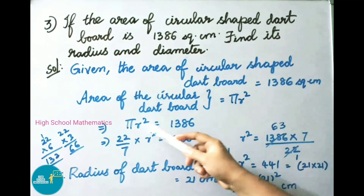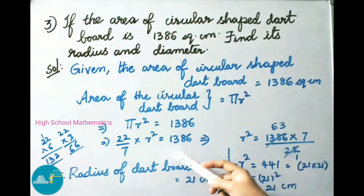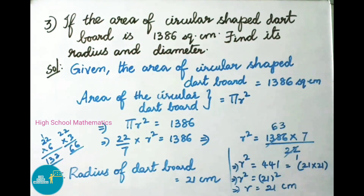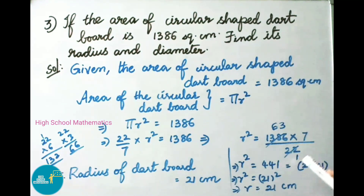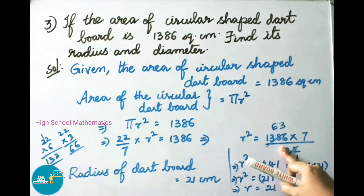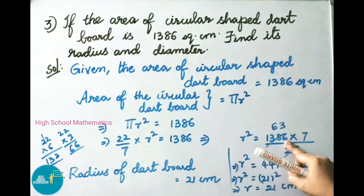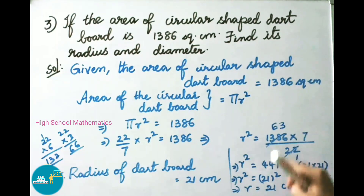So that implies pi R squared equals 1386. That implies 22 by 7 into R squared equals 1386. On transposing, R squared equals 1386 into 7 by 22. Now, 22 sixes are 132; subtracting 138 minus 132 gives a remainder 6, making the number 66. 22 threes are 66, so 3 times; therefore 22 goes into 1386 sixty-three times.